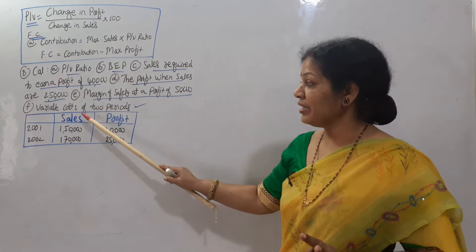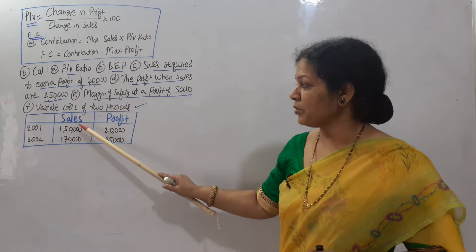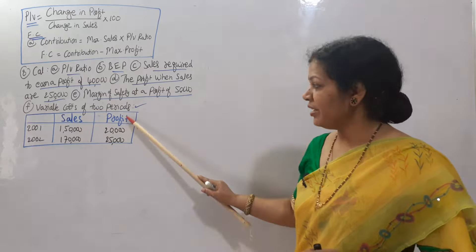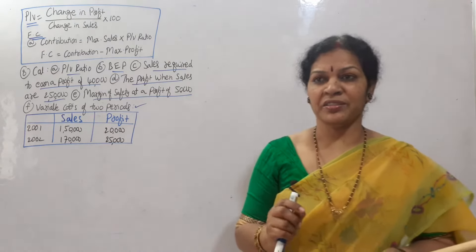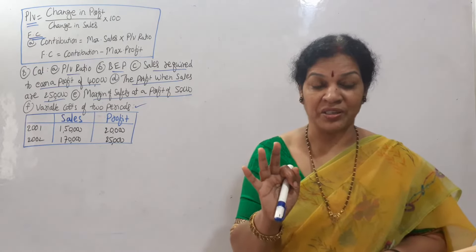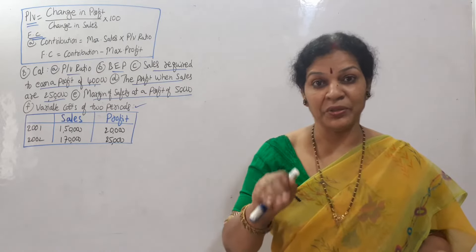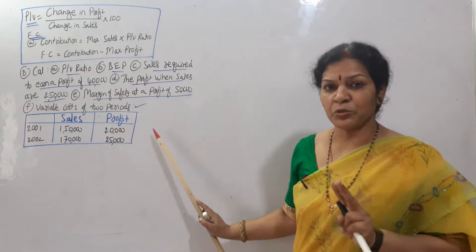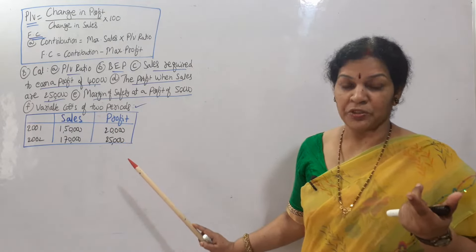The data given includes sales and profit for two years — 2001 and 2002. Both years' sales and profit are given. So far, what we have done is: generally sales, variable cost, and fixed cost are given, and PV ratio equals S minus V divided by S into 100. But this is a different problem — two years' sales and two years' profits are given. So how do we calculate PV ratio?